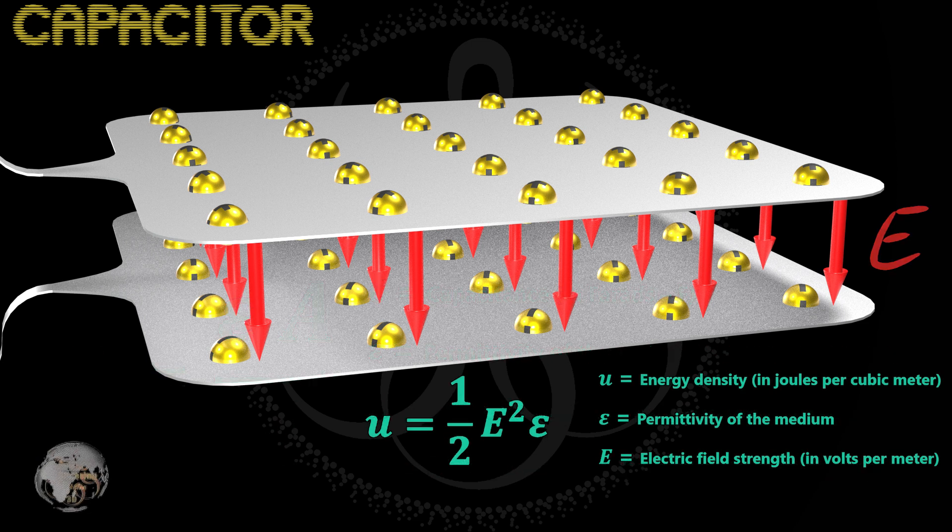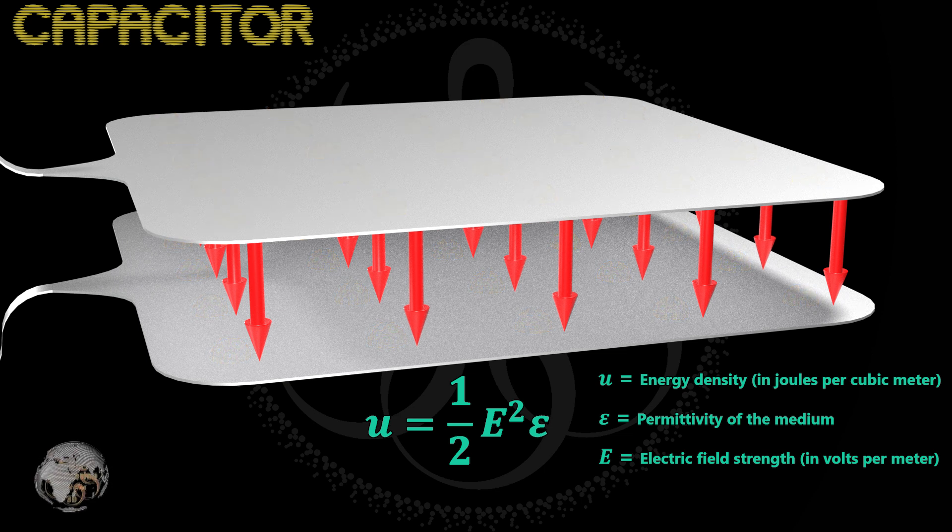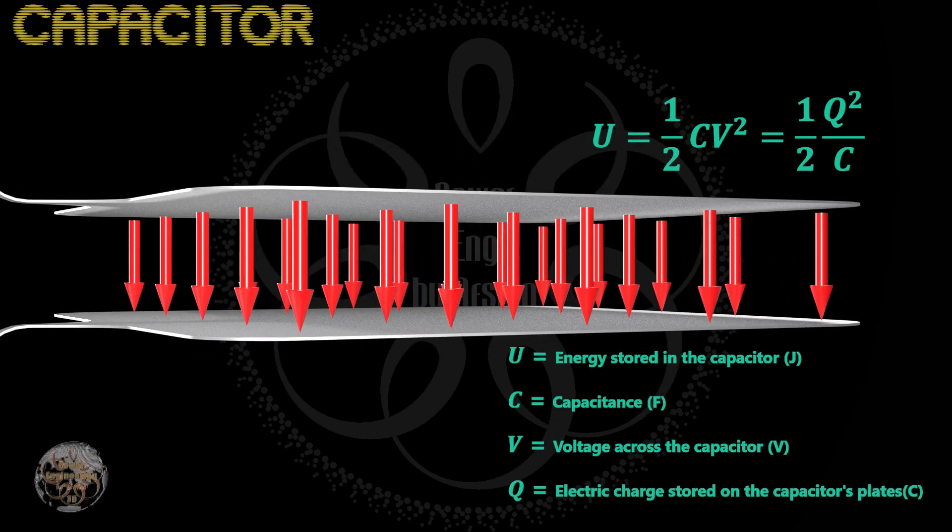The energy stored in the electric field is a scalar quantity, and its unit in the SI system is the joule. This energy can be released as useful work, or converted into another form of energy.